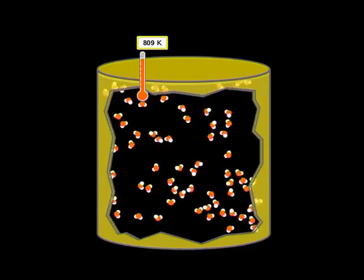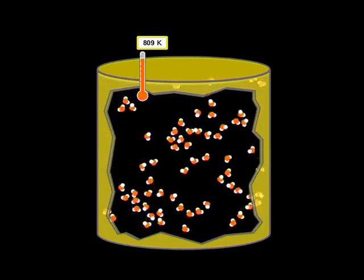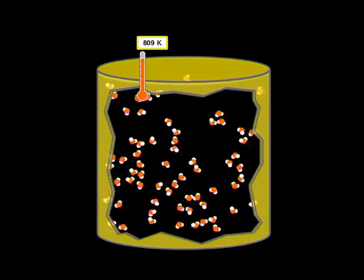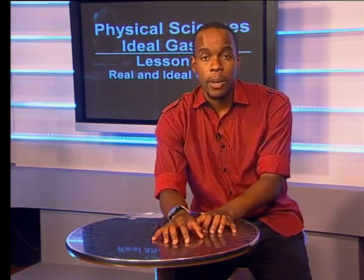Remember that in our model, ideal gas molecules jump around and fill the container they are in. In this model, all the ideal gas's volume comes from the spaces between the molecules. The molecules themselves take up no space at all.